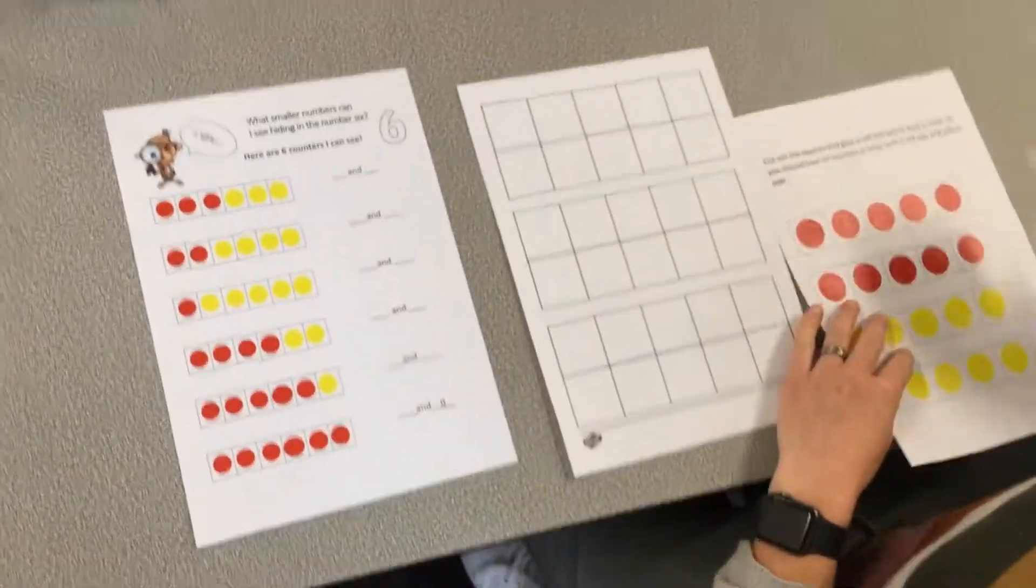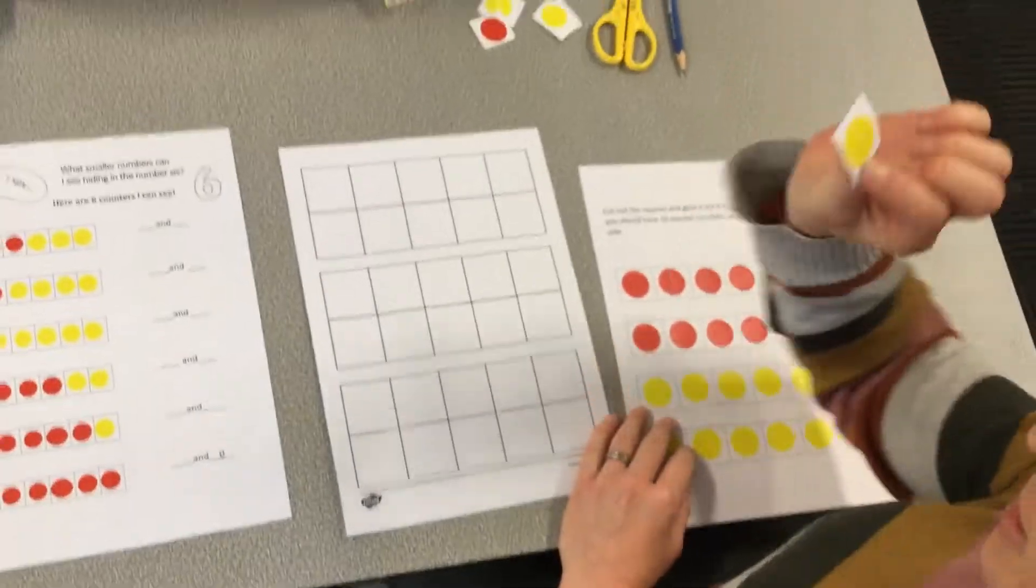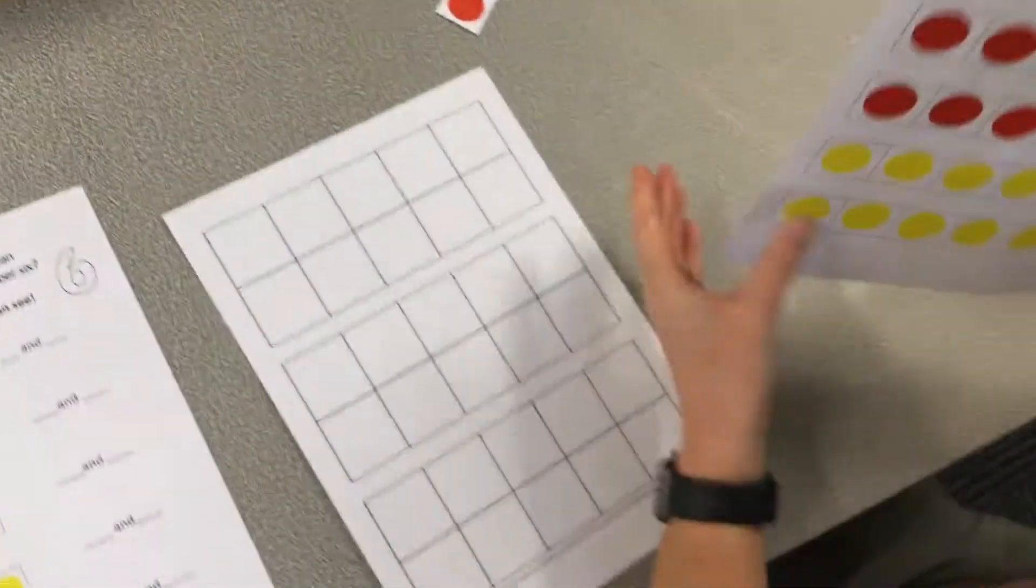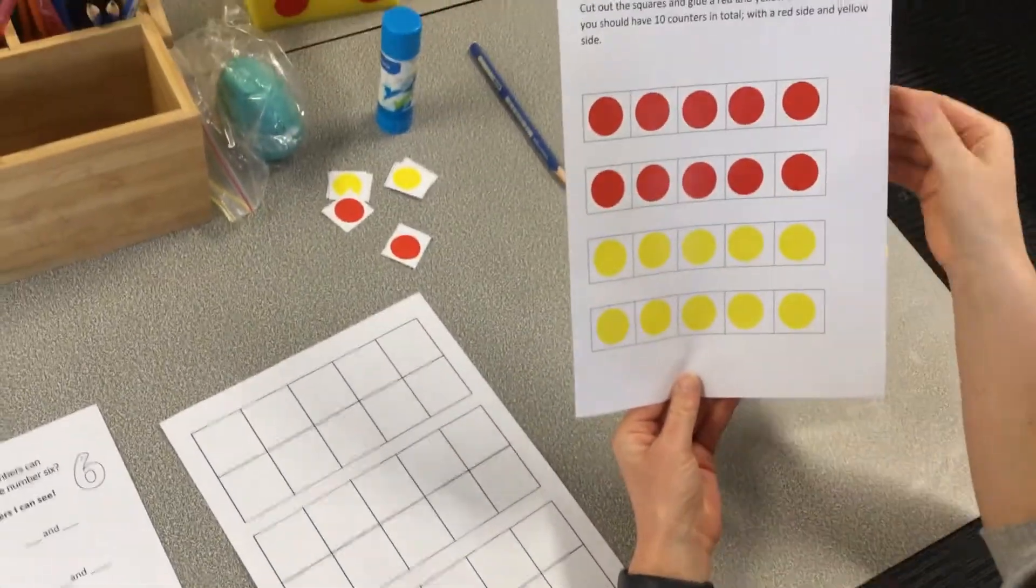Alrighty. Perhaps we're going to move over to the other side to find out what we're going to be working on today. Now, yesterday, Miss Baxter was very busy cutting up some counters, some red and yellow counters so that we could practice partitioning. And you'll have another page today that you can look at.